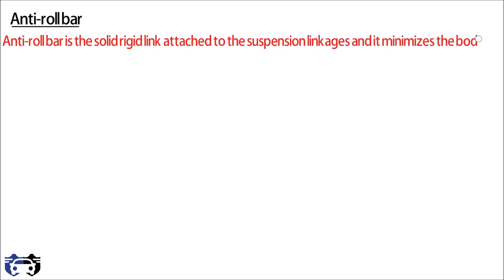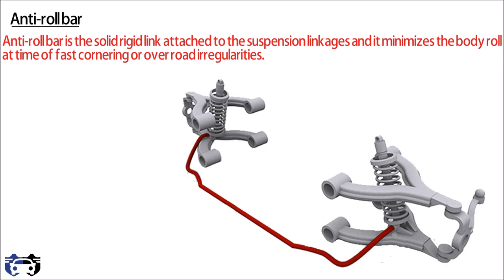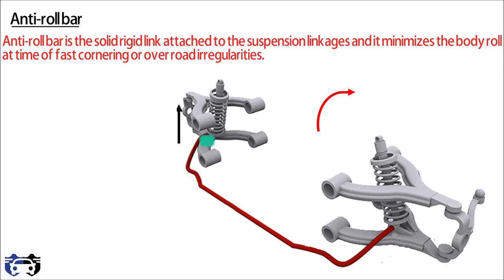Now let's see what is the anti-roll bar. The anti-roll bar is a solid rigid link attached to the suspension linkages that minimizes body roll during fast cornering or over road irregularities. Here in this double wishbone geometry, the red bar is the anti-roll bar attached to the control arms. When the vehicle takes a right turn, increased load on the left tire causes those suspension points to move upward, displacing the anti-roll bar attachment point upward, applying a counter-clockwise torque on the anti-roll bar. The right tire linkages were moving down due to roll, but the torque on the anti-roll bar gives them a tendency to move upward, effectively balancing the left and right forces and minimizing vehicle roll.